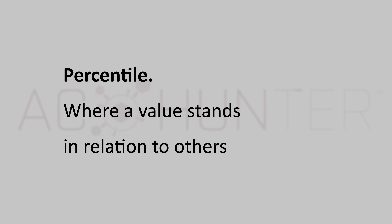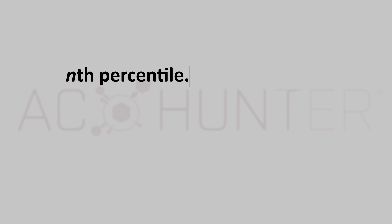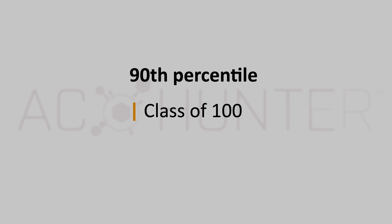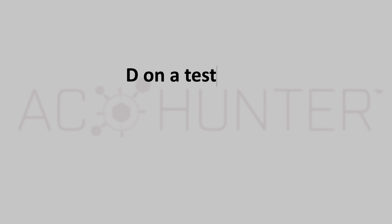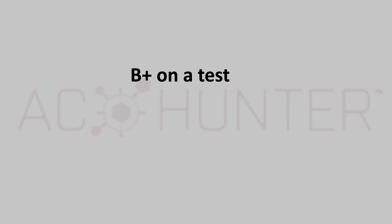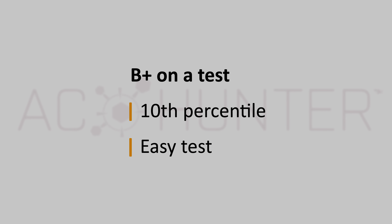The next important idea is percentile — a way to understand where a value stands in relation to others in the same set. It's usually expressed as the nth percentile, meaning a value is greater than n percent of the total values. For example, if you score in the 90th percentile on a test in a class of 100, you performed better than 90 other students. If you got a D but it's in the 95th percentile, it was probably a very difficult test and you did exceptionally well. Conversely, a B-plus in the 10th percentile means 90 percent of the class did better than you — suggesting it was likely a very easy test.